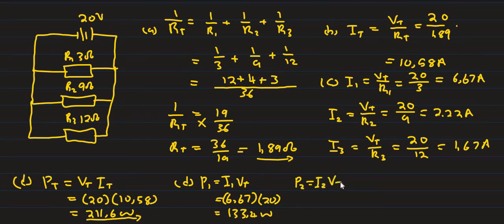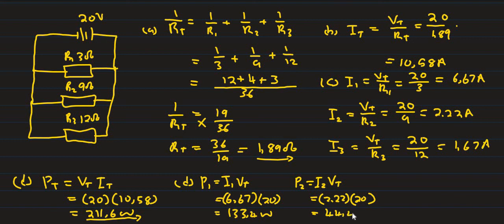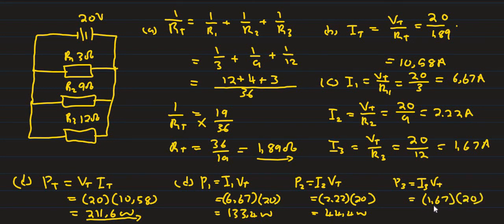Power through resistor 2: P2 equals I2 multiplied by V total. Current through resistor 2 is 2.22, V total is 20. 2.22 multiplied by 20 equals 44.4 watts. Power number 3: P3 equals I3 multiplied by V total. I3 is 1.67, V total is 20. 1.67 multiplied by 20 equals 33.4 watts.